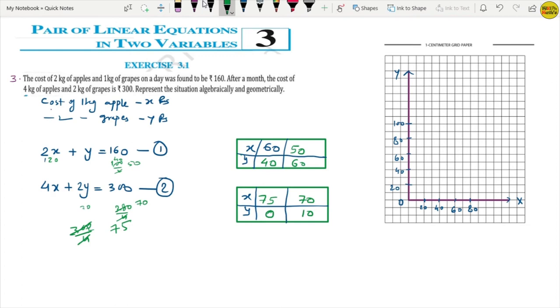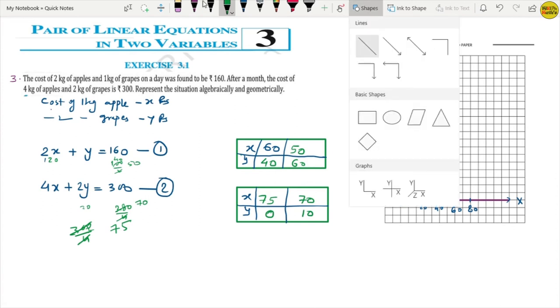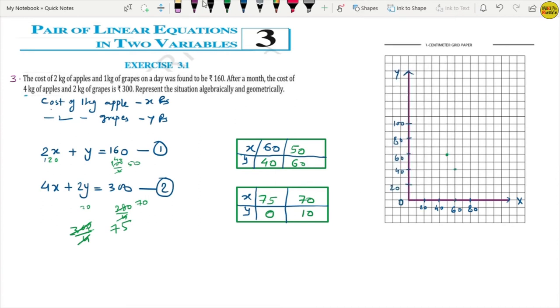Now let's plot it. First equation, 60 and 40. So this is 60 and 40. Here point here, 60 and 40. Now 50 and 60. This is 50 and this is 60. This is 50 and 60. So join the lines. We will join the lines.